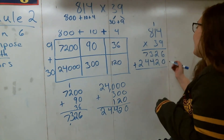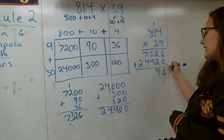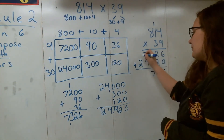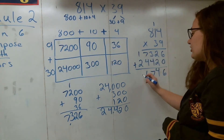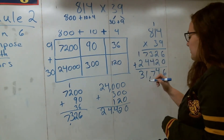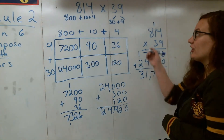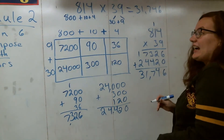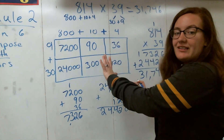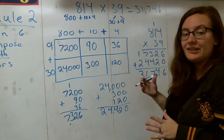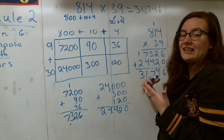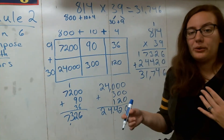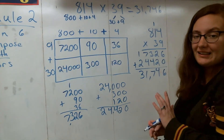Now I'll start adding: 6 plus nothing is 6; 2 plus 2 is 4; 3 plus 4 is 7; 7 plus 4 is 11, carry the 1; and 1 plus 2 is 3. This gives me a final answer of 31,746. It's very important that we use the area model to help us out with these really big numbers — they're only going to get bigger. Using the area model helps us keep track of all our partial products and all different parts of this problem so we can hopefully make fewer mistakes.